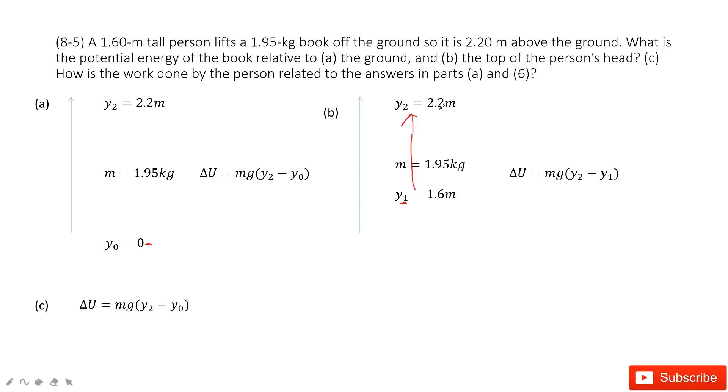this is y2, 2.2 meters. We can find the distance above the reference point is y2 minus y1. So the potential energy of the book is mg(y2 - y1).